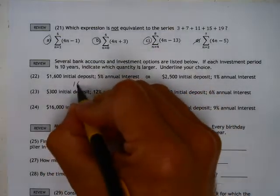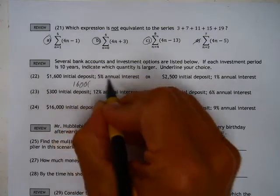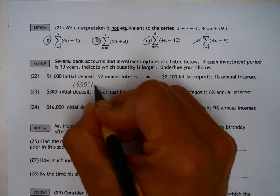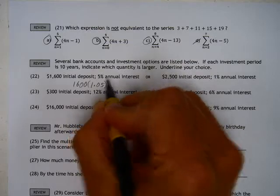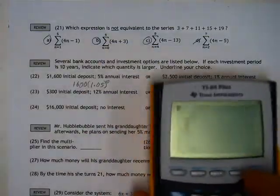And so this is our initial value, our zero term. And if we're gaining 5%, then we're looking at 1.05, and for 10 years we're raising it to the 10th power.